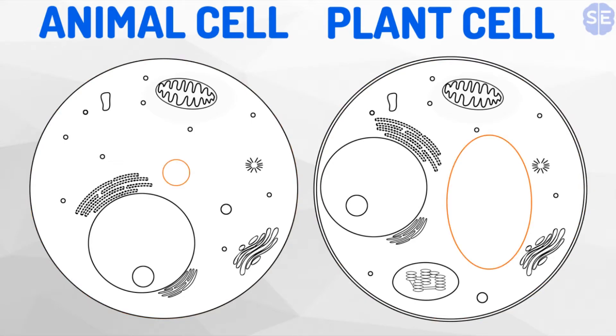A very large and obvious structure in the plant cell, which is present but much smaller in the animal cell, is the large vacuole. In plant cells, this is usually full of water keeping the cell rigid. If the cell is lacking water, the vacuole decreases in size, and this is what causes wilting in plants.